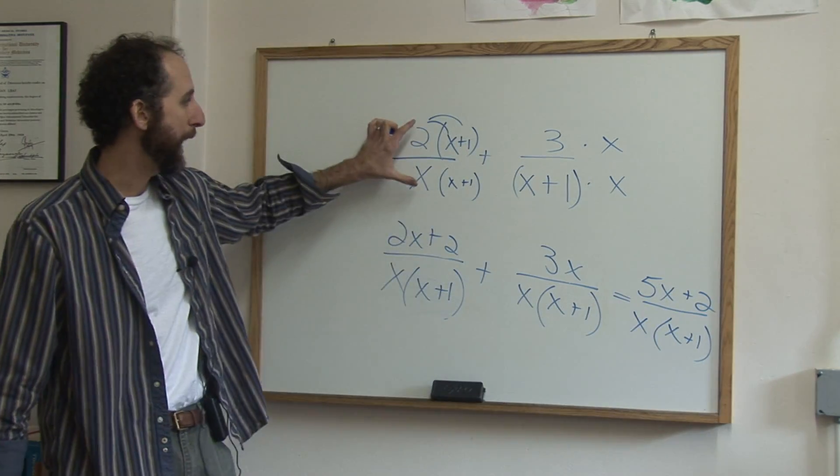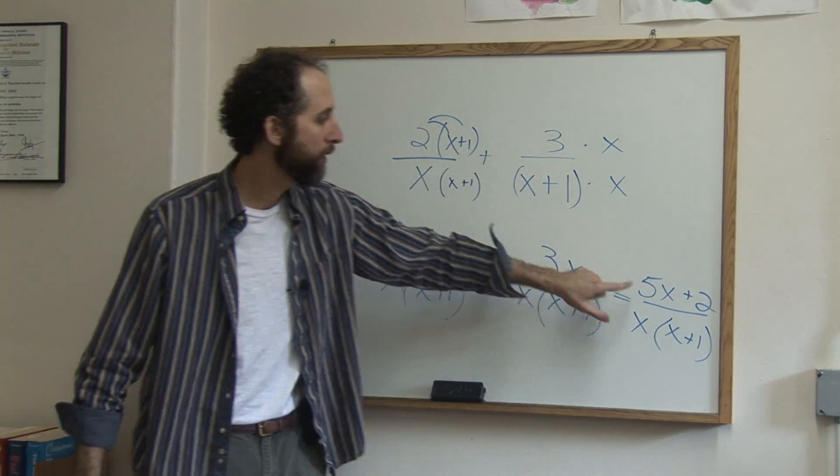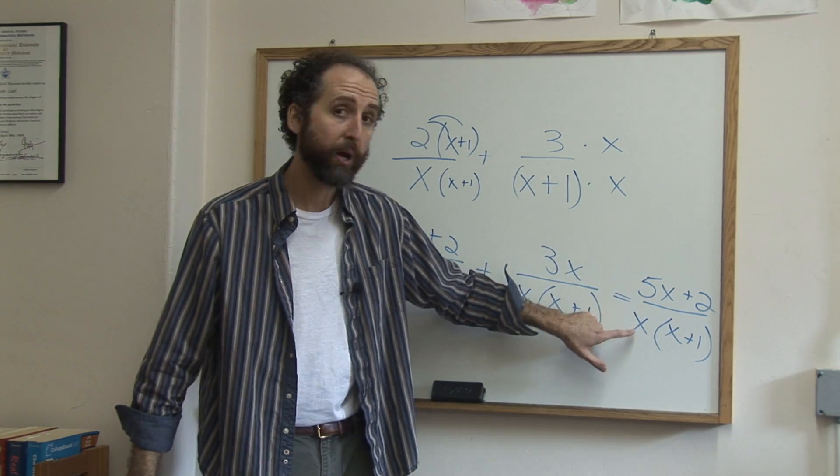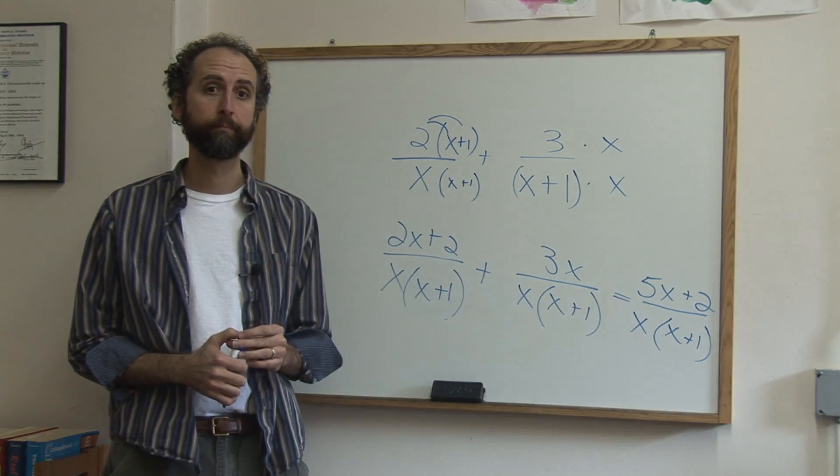Final answer of this rational expression plus this one, five x plus two on the bottom, x times x plus one.